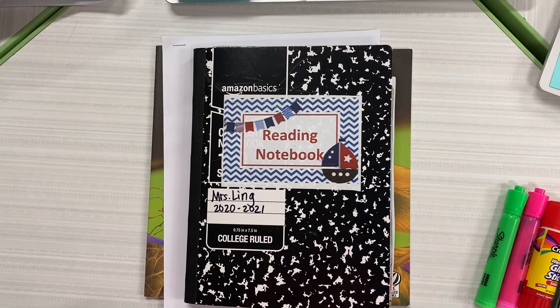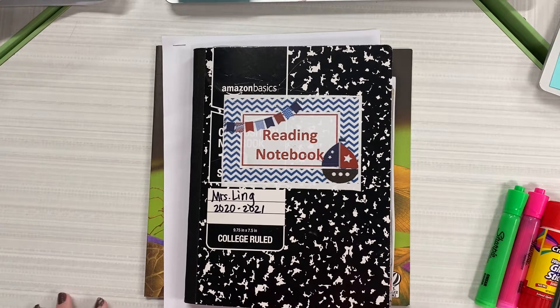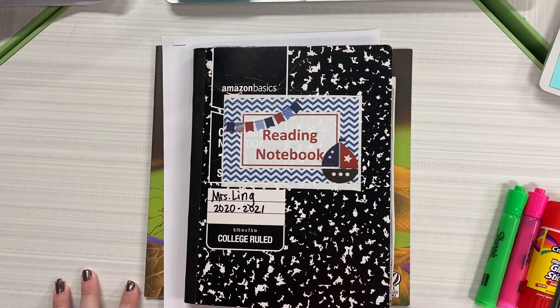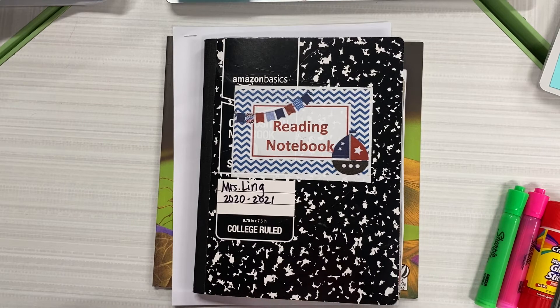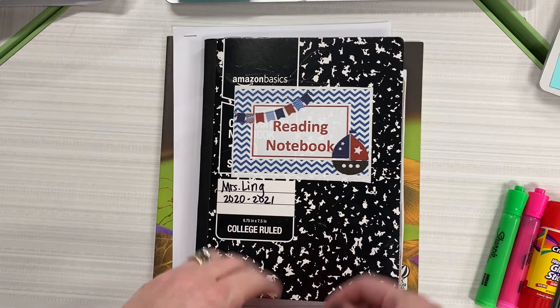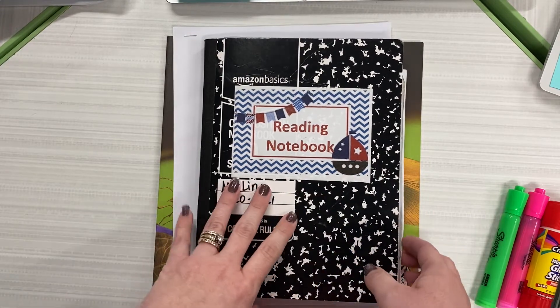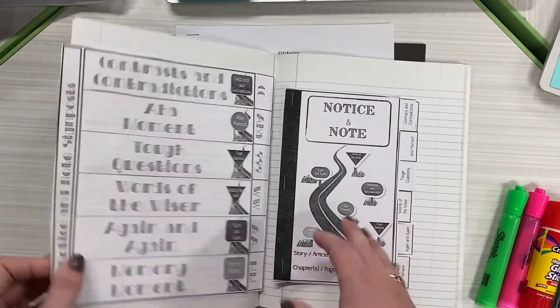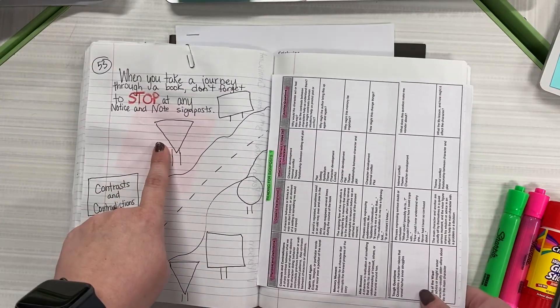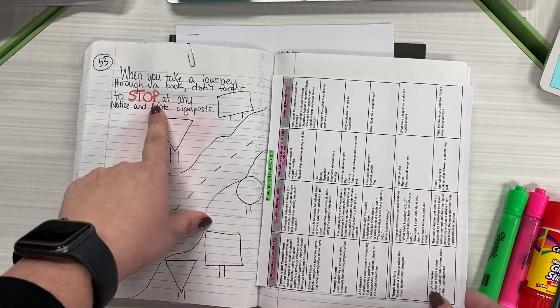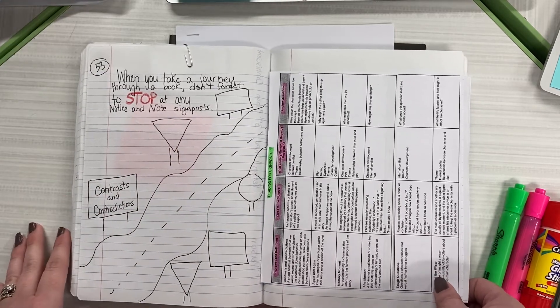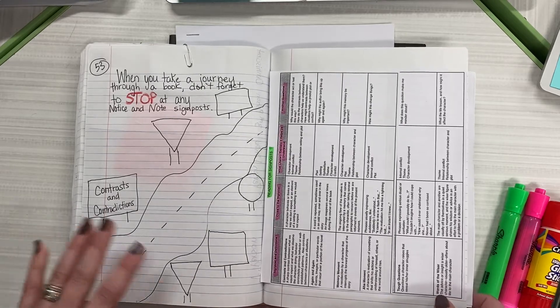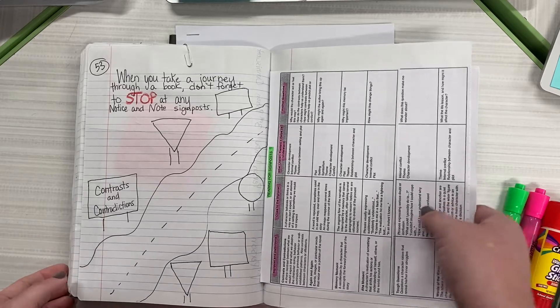Today you were asked to watch the Pixar short video called Presto. Today is our first day focusing on our notice and note signpost contrast and contradictions. We're going to take a few moments to talk about what contrasts and contradictions mean and how we notice those in books that we are reading or movies that we watch. So we're going to start with our notebooks.